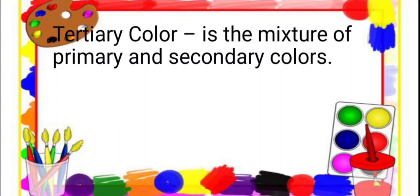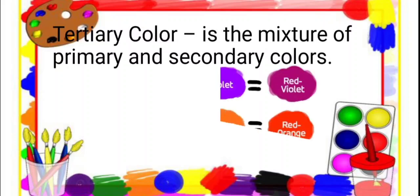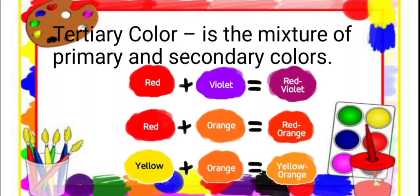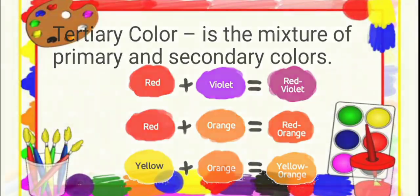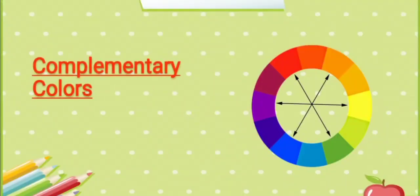The last category is tertiary colors. Tertiary color is a mixture of a primary and a secondary color. For tertiary colors, we have red-violet, red-orange, and yellow-orange. Complementary colors are the opposite colors on the color wheel, and they create contrast.